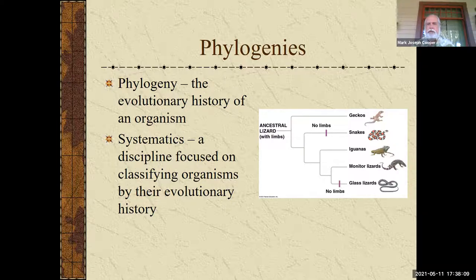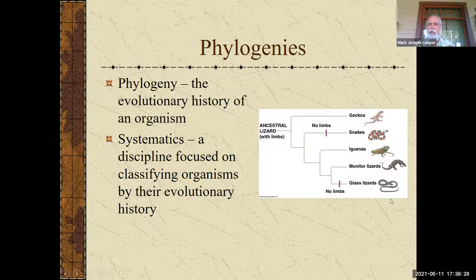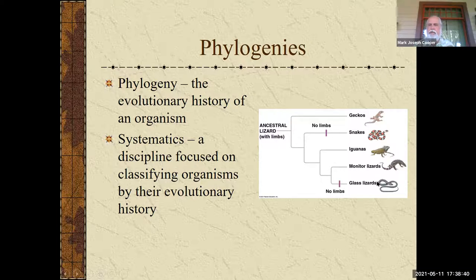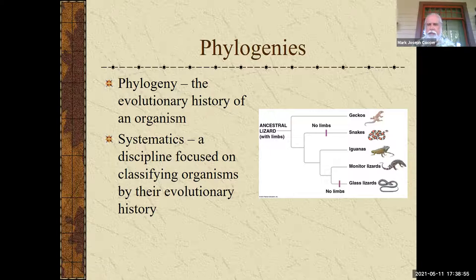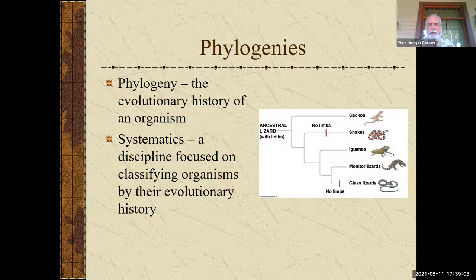What systematics does is figure out how things are related to each other. Here we're looking at animals with limbs — pretty much the lizards and snakes, which are all one big happy class together. Snakes fall out here, geckos are one of the early original lizards, and then we have glass lizards that don't have any limbs. It turns out limb loss actually evolved twice. A glass lizard or legless lizard is truly a lizard and not a snake — there are differences.